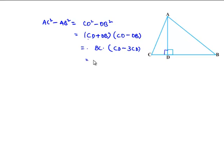CD minus DB is nothing but CD minus 3 times CD, then we get minus 2 times BC into CD. So now in order to change the sign of right hand side, let us multiply it with minus 1.